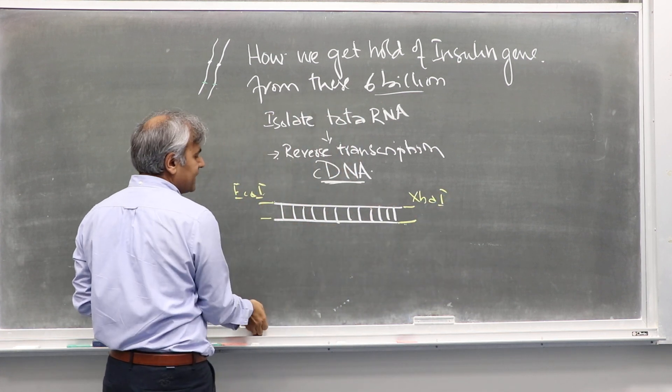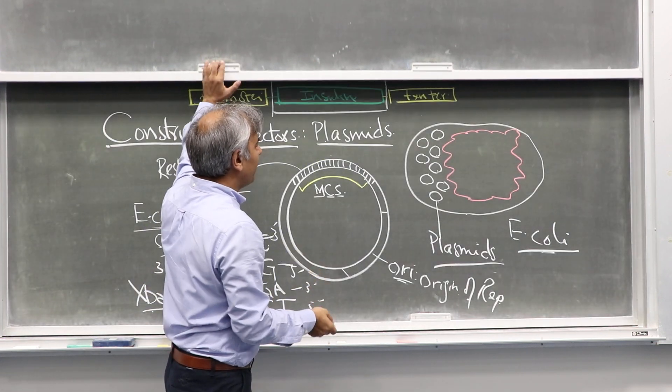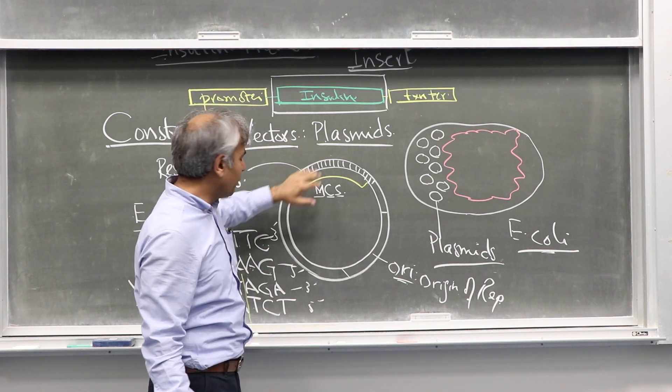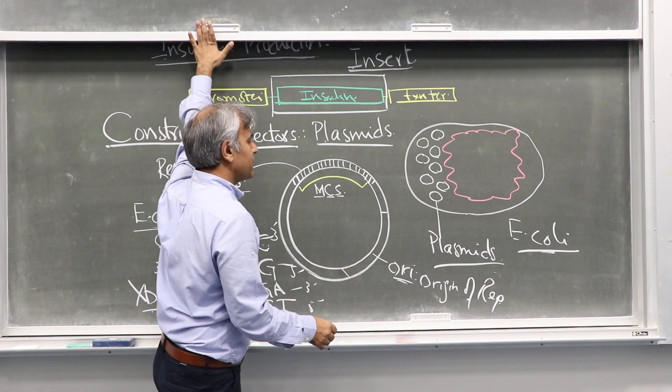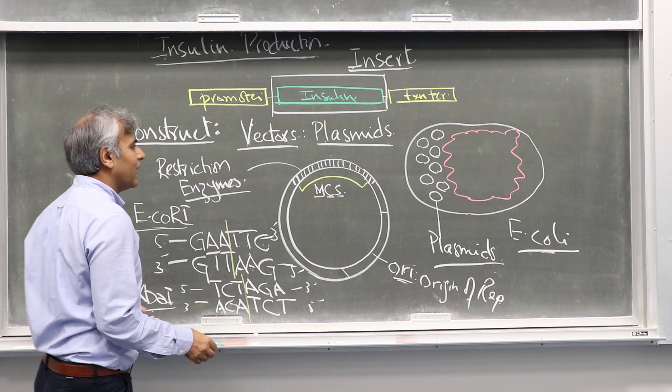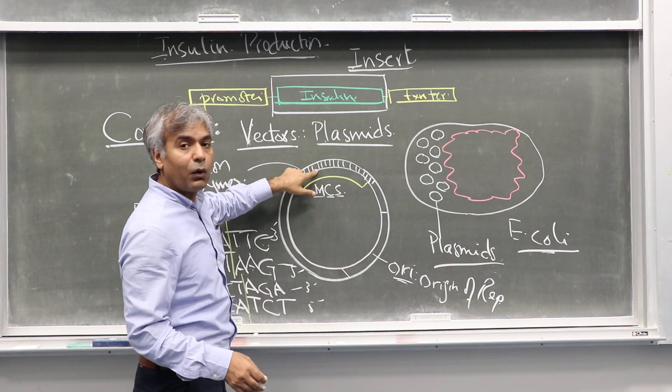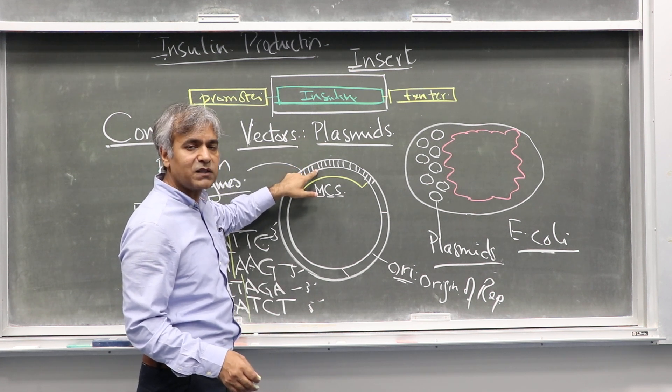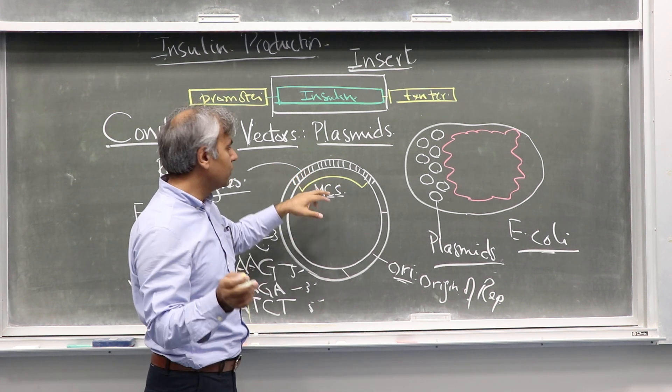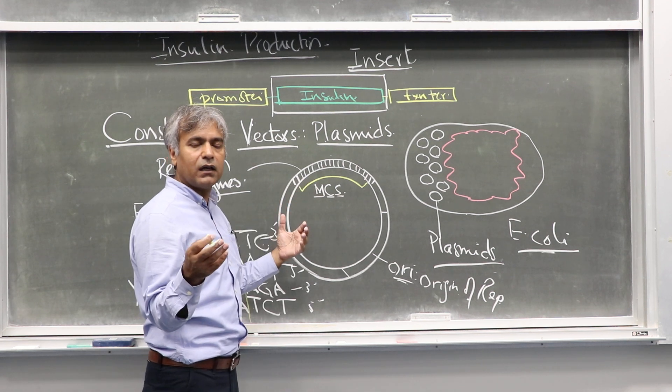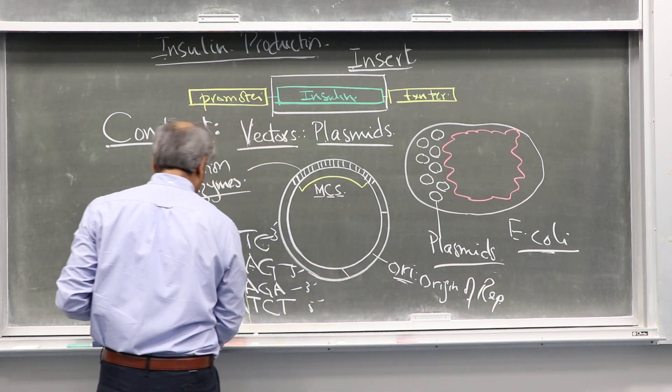We digest the insulin cDNA with these two enzymes. We digest the vector with the same two enzymes, and then we ligate the insulin insert with vector, which is also digested with EcoRI and XbaI. DNA ligase is going to glue it—it will bring back the phosphodiester sugar phosphate backbone, and the insulin gene will be cloned within that.